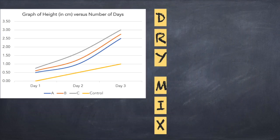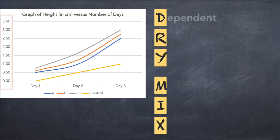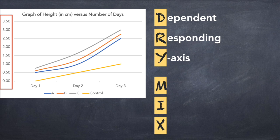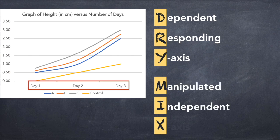For better retention of terms always remember DRY MIX. DRY stands for dependent, responding, and y-axis. This means that the dependent or responding variable takes the y-axis in the graph. MIX is manipulated, independent, x-axis which means that the manipulated or independent variable takes the x-axis.